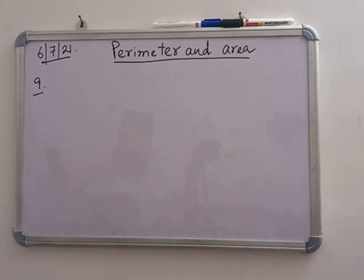Find the cost of cultivating a rectangular field 35 meter long and 18 meter wide at rupees 20 per square meter. Find also the fencing of the field at rupees 15 per meter.